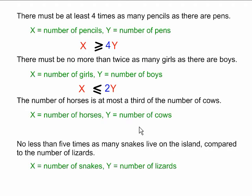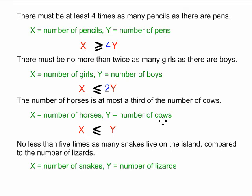The third example: the number of horses is at most a third of the number of cows. Let's place our x and our y and think about our symbol. 'At most' means less than or equal to. We have 'a third,' which means something is being multiplied by three — we don't have to worry about multiplying by a third. Which of x and y will be multiplied by three? The number of cows is the bigger number, so it is the number of horses, or x, that is going to be multiplied by three. We can multiply our smaller number of horses by three to try to equal the larger number of cows.